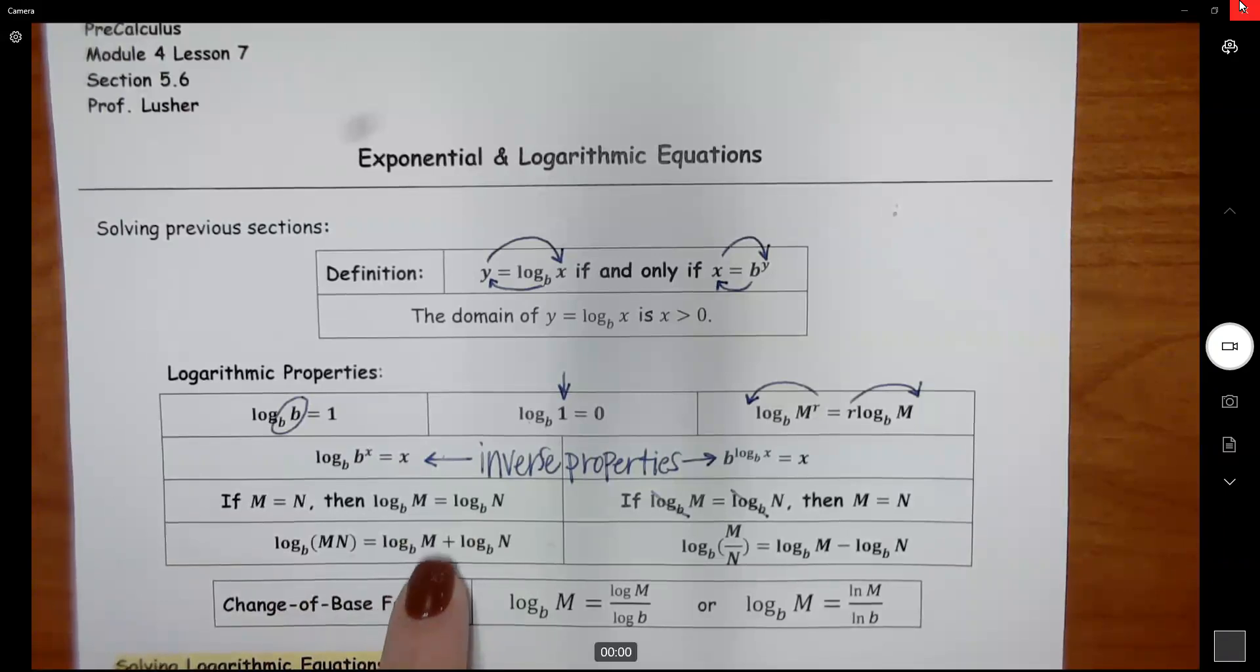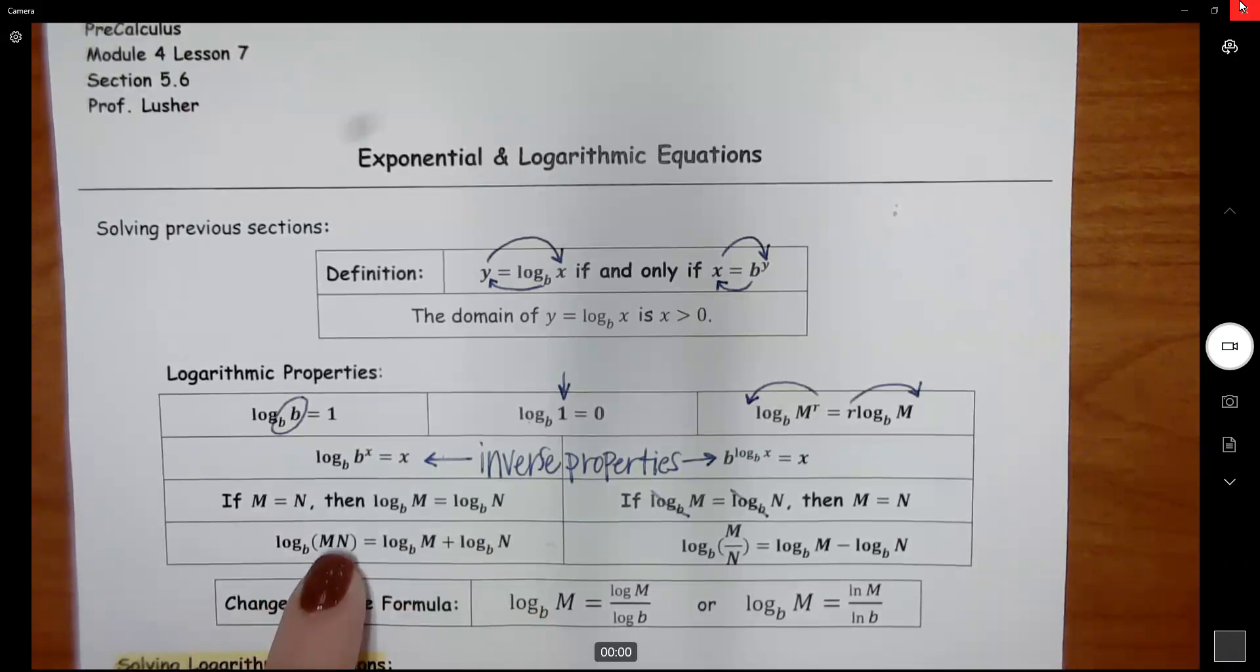So if you have log base b of m plus log base b of n, because that is a plus sign, you can combine those, and it's just log base b of those two things being multiplied.